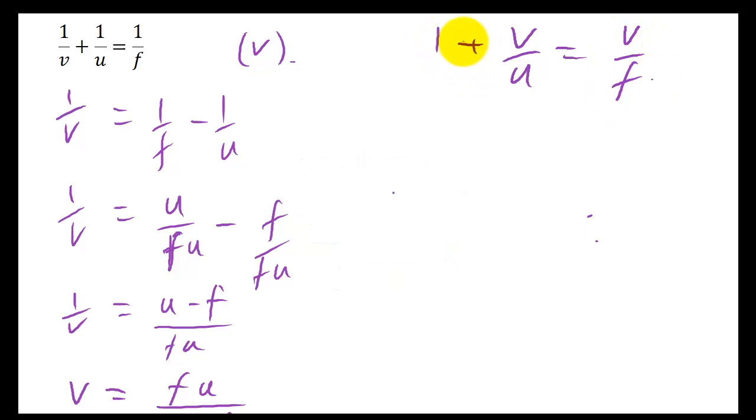If you've got a plus in between your things, and you times the left side by V, that means you have to times each term by V. Imagine having brackets around here, and then timesing that all out by V - cancel here, and end up with V over U there. It's a good way to imagine it.